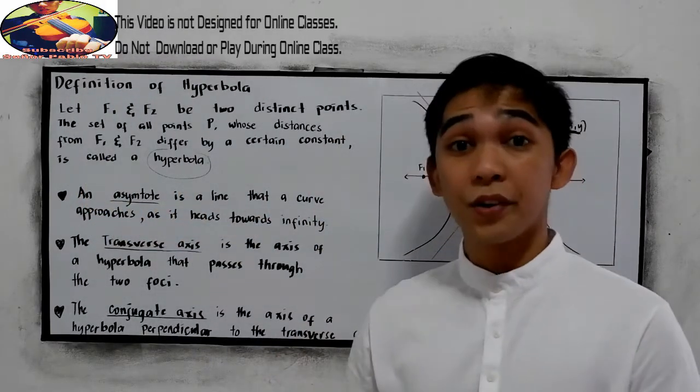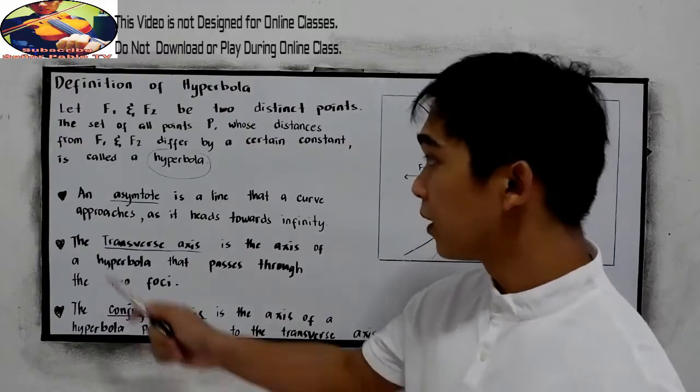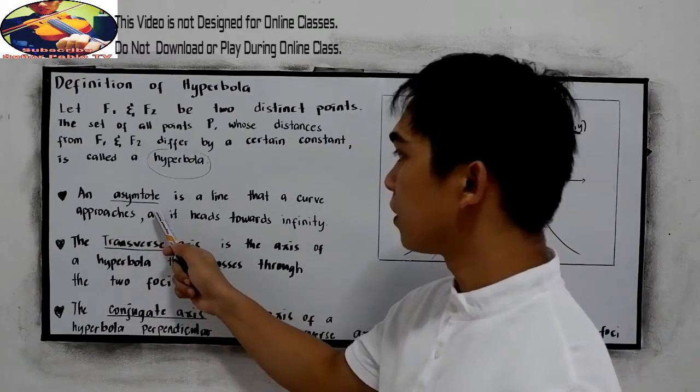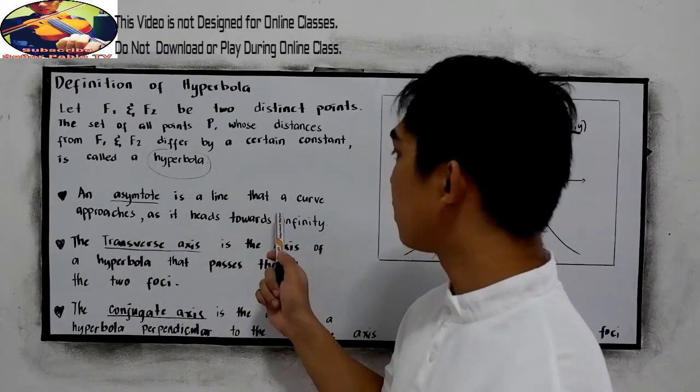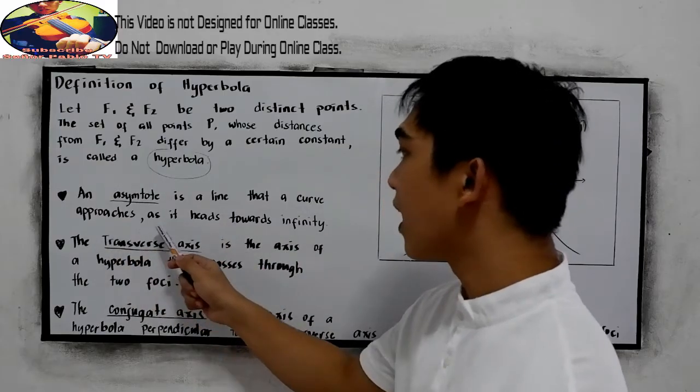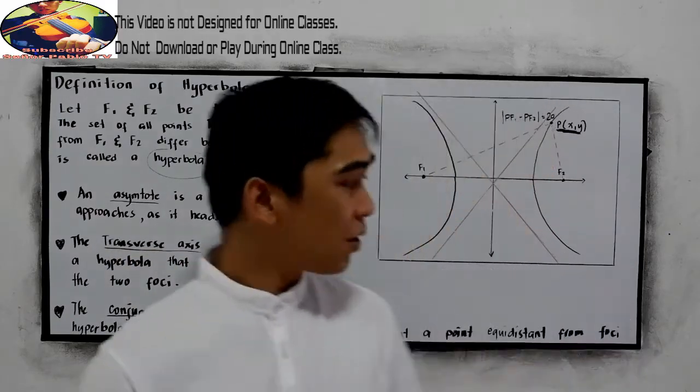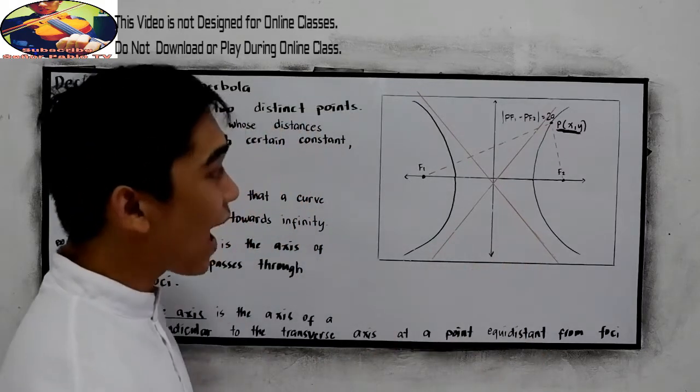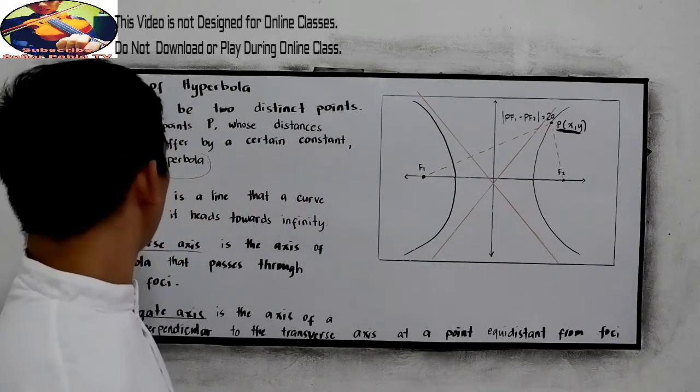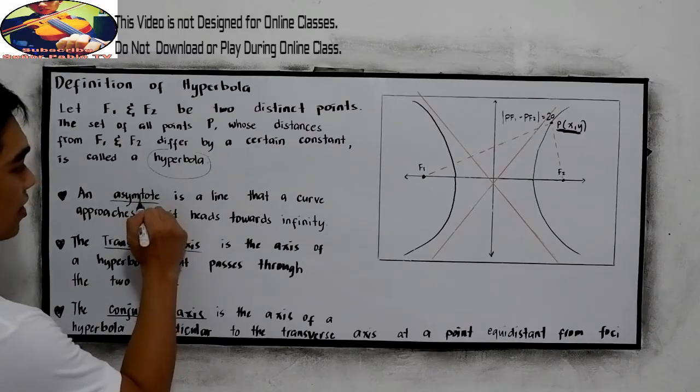You will also encounter the following terms. An asymptote: An asymptote is a line that a curve approaches as it heads towards infinity. So in our graph, where is the asymptote? Here. Asymptote.